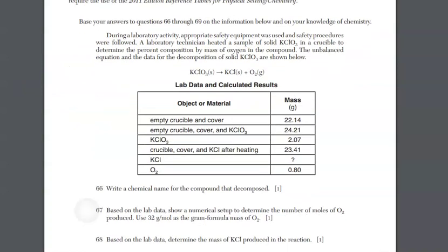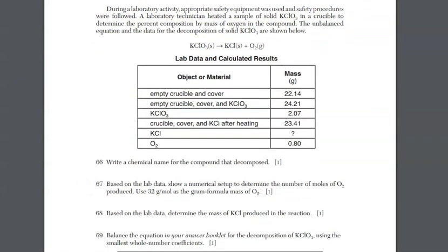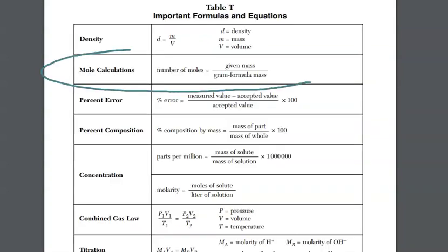Question 67. Based on the lab data, show a numerical setup. Numerical setup means that you're going to plug in the numbers into an equation and that's it. You're not calculating the answer and you don't have to worry about units either. Based on the lab data, show a numerical setup to determine the number of moles of O2 produced. You're given the gram formula mass of O2 as 32 grams per mole.